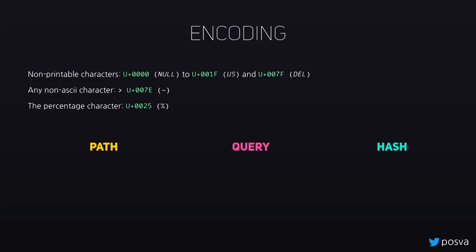There are other rules specific to every section of the URL. The hash is the simplest: you have to encode the space, double quote, less-than, greater-than, and backtick. For the path, you also need to encode all those characters, plus the hash, the question mark, and curly braces — because the search and hash come after, so you need to encode them if you want to use them literally. The query is very similar to hash, except you replace the backtick with a hash, and if you want to use the ampersand and equal symbols inside keys or values, you need to encode them.